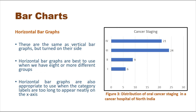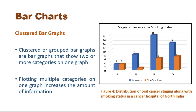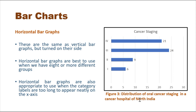Horizontal bar graphs are the same as vertical bar graphs but turned on their side. They are best when there are eight or more different groups — again, not a hard-and-fast rule, just a guideline so the graph remains neat and clear. Horizontal bar graphs are also appropriate when category labels are too long to appear neatly on the x-axis. Figure three represents the same oral cancer staging data in horizontal bar graph form.